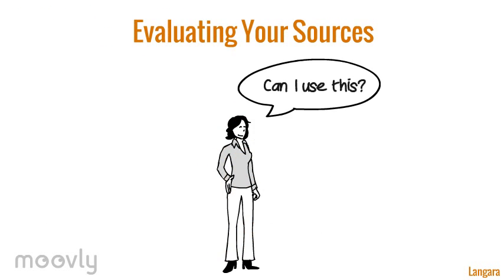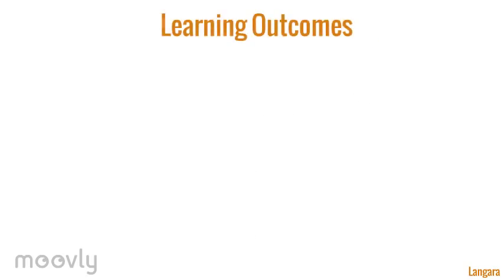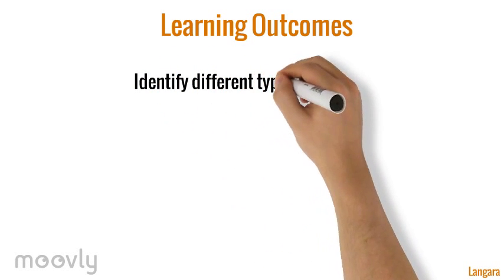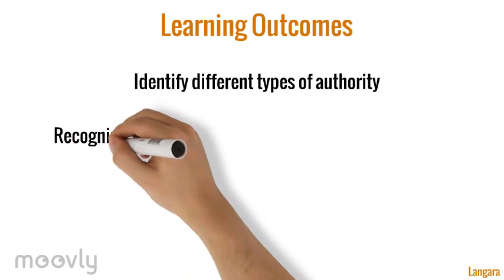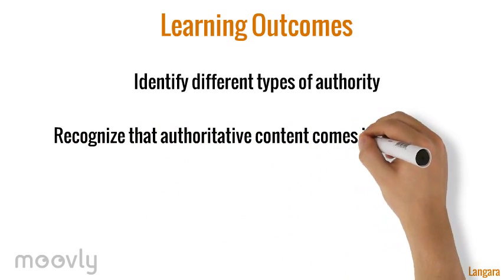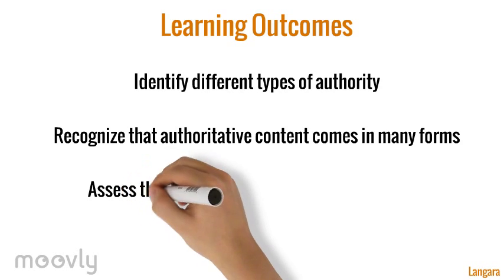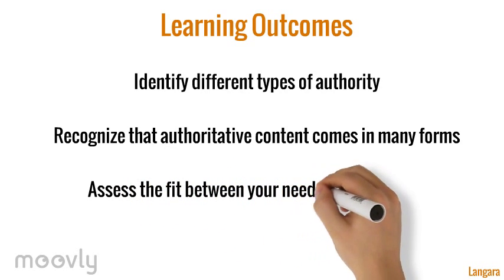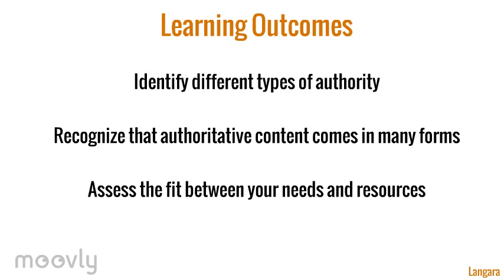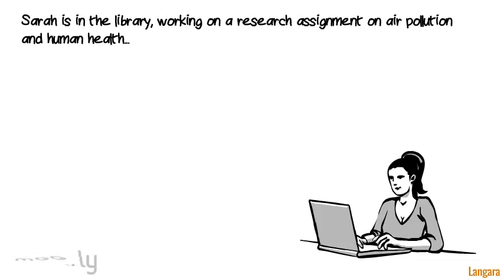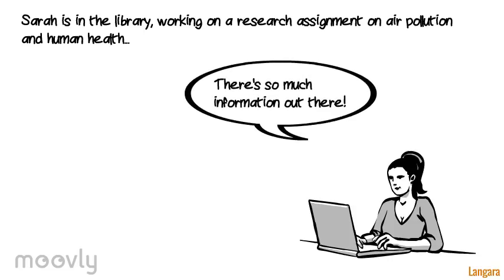Welcome to 'Can I Use This?' — the evaluating sources tutorial. By the end of this tutorial you will be able to identify different types of authority such as subject expertise, experience, and scholarly qualifications, recognize that authoritative content comes in many forms, and assess the fit between your needs and the sources you find. There's so much information out there.